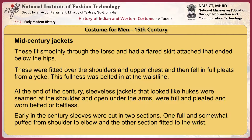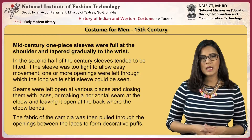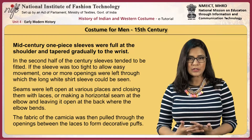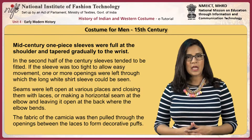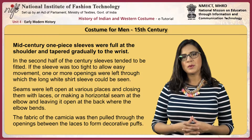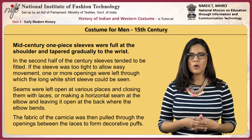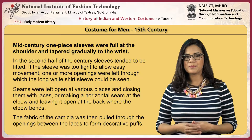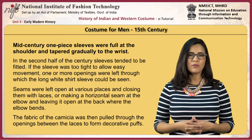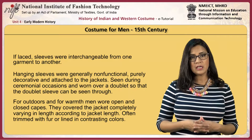Early in the century, sleeves were cut in two sections: one full and somewhat puffed from shoulder to elbow, and the other section fitted to the wrist. Mid-century, one-piece sleeves were cut full at the shoulder and tapered gradually to the wrist. In the second half of the century, sleeves tended to be fitted. If sleeves were too tight to allow easy movement, one or more openings were left through which a white shirt sleeve could be seen. Seams were left open at various places, closing them with laces or making a horizontal seam at the elbow and leaving it open at the back where the elbow bends. The fabric of the camicia was pulled through the openings between the laces to form decorative puffs. If laced, sleeves were interchangeable from one garment to another.